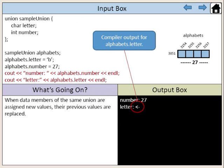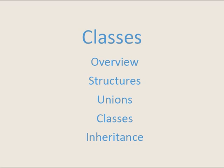This is the compiler output for alphabets.letter. This concludes our section on unions. Next we will be discussing classes.